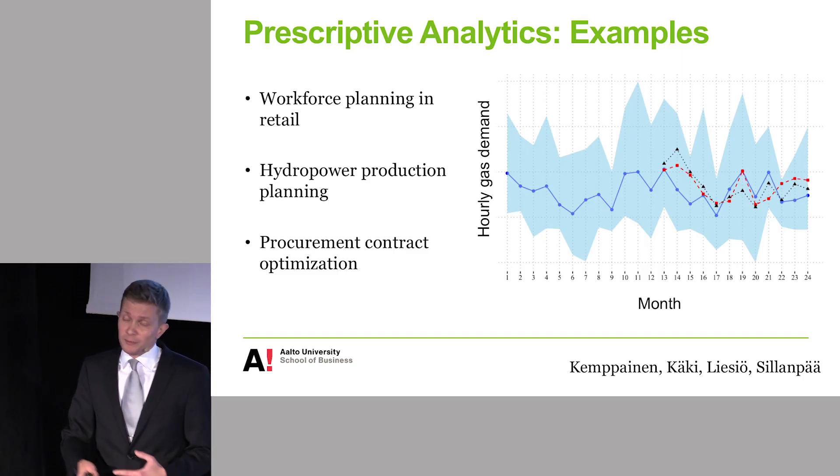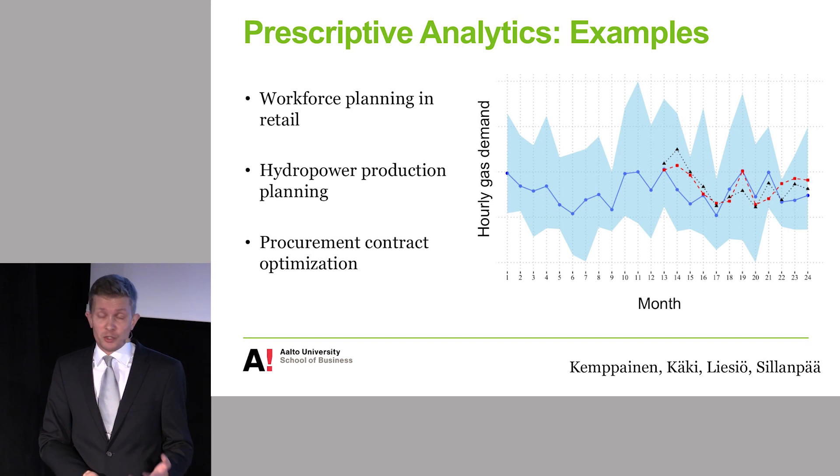Similarly, in hydropower production planning, you need to decide on the production for the following 24 hours — how much electricity you will produce — without really knowing the electricity spot prices. To make the decision more complicated, you have the fluid dynamics of the river system and uncertainties related to weather: how much it will rain, how much water you have to produce electricity. To identify the optimal production plan is really not possible manually; it requires the use of mixed integer linear programming.